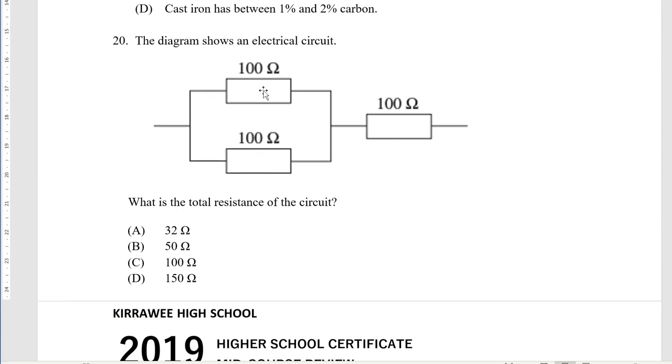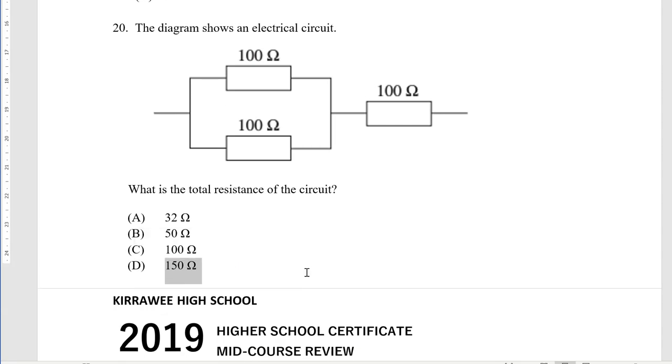Whenever you see two resistors in parallel that have the same resistance you can just halve them. But we'll go through it properly. In the formula sheet it says one over RT equals one over R1 plus one over R2. So we've got one over 100 plus one over 100 is two over 100. If we flip that we get 100 over 2, which is 50. 50 plus 100 equals 150, D.